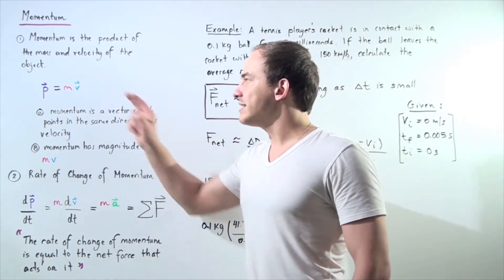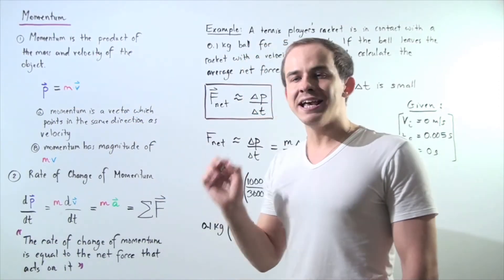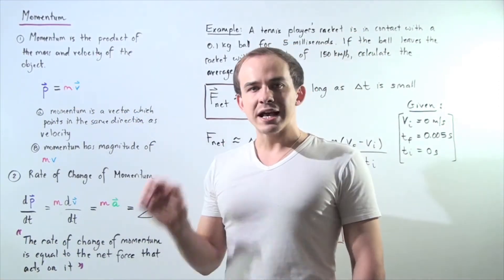So momentum is given by a lowercase letter p. And just like velocity, momentum is a vector. It has both magnitude as well as direction.